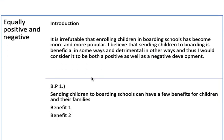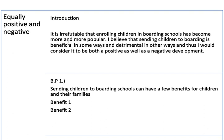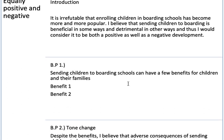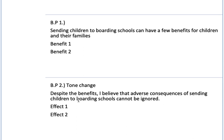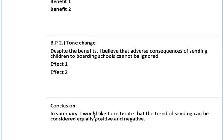The third type is the equally positive and negative balanced essay. Introduction: 'It is irrefutable that enrolling children in boarding schools has become more and more popular. I believe that sending children to boarding school is beneficial in some ways and detrimental in other ways, and thus I would consider it to be both a positive as well as a negative development.' Body paragraph 1 covers benefits for children and their families. Body paragraph 2, with a tone change: 'Despite the benefits, I believe that the adverse consequences of sending children to boarding schools cannot be ignored' — then effect 1 and effect 2.